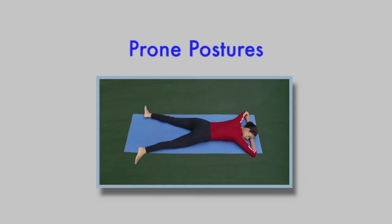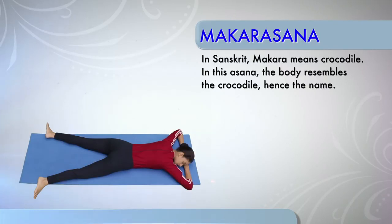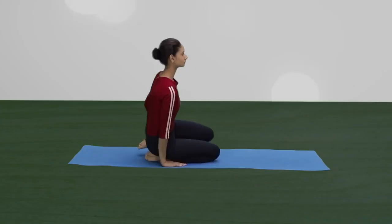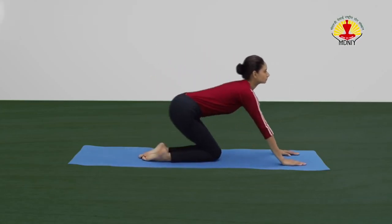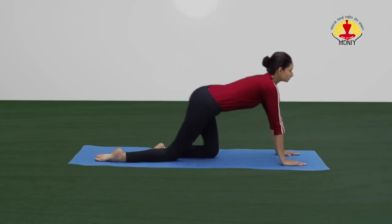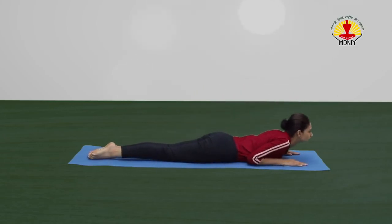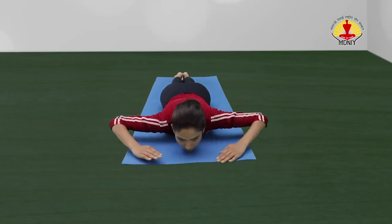Prone Postures. Makarasana or the Crocodile Posture. Caution! Avoid this practice in case of pregnancy and frozen shoulder. To start, slowly lie down on your stomach with feet together and toes pointing outwards. Put the chin on the hands.